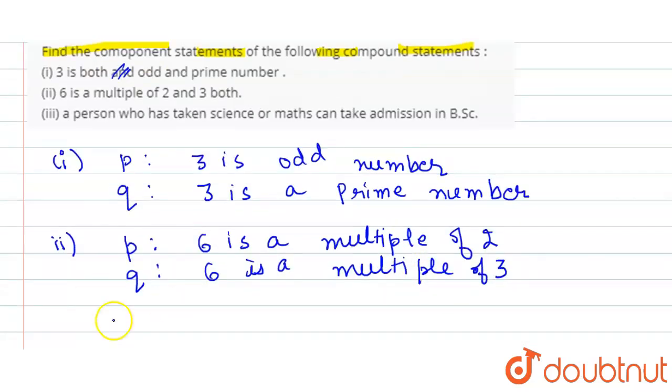And similarly, the third part of the question is: a person who has taken science or maths can take admission in B.Sc. So the first component statement is a person who has taken science can take admission in B.Sc.